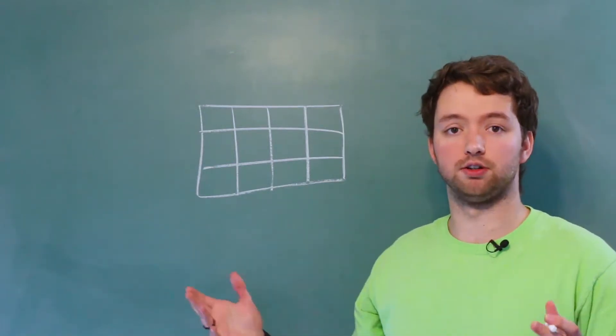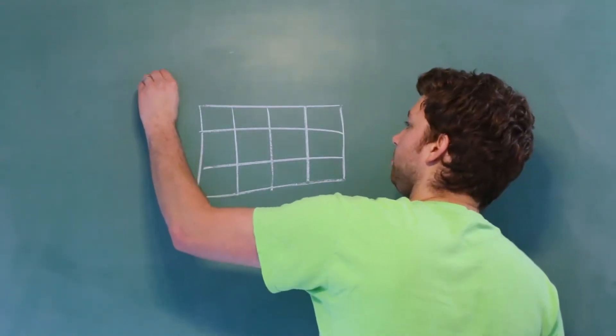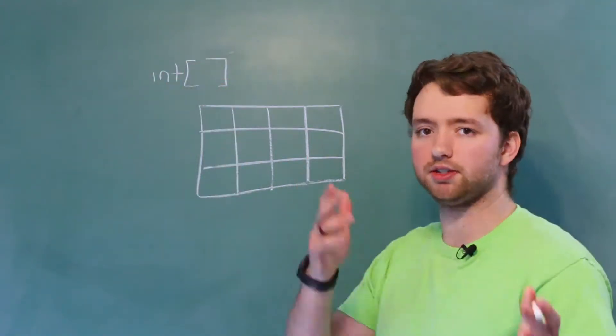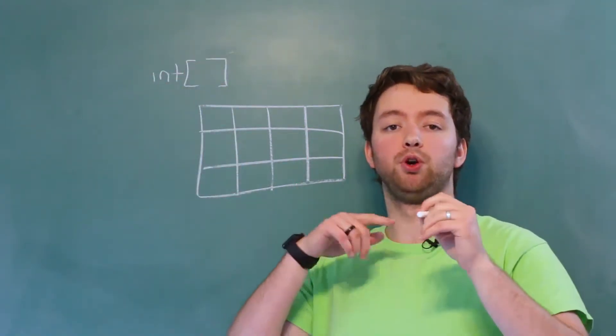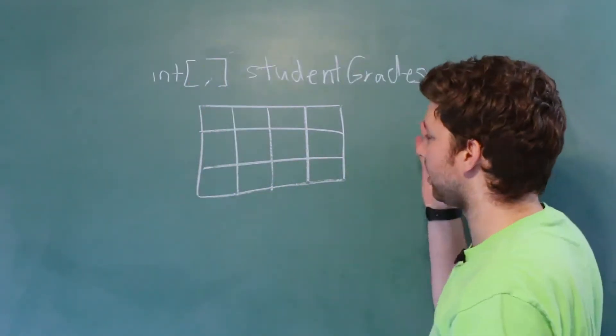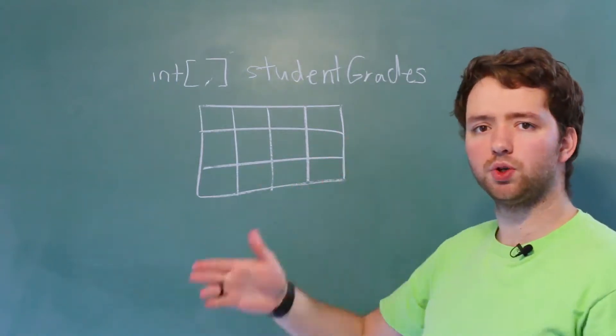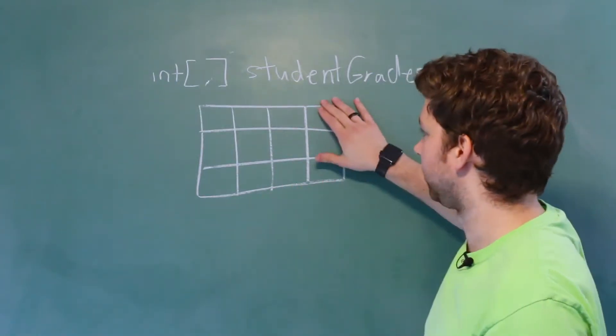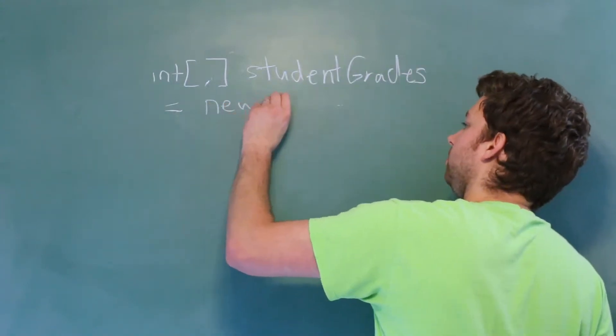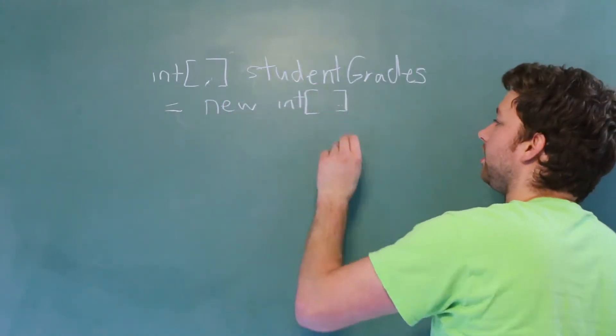Now the way you create one of these is going to look like this. You choose a type such as int and put the square brackets just like you would with a single dimensional array, but this time you're going to put a comma. Give it a name, student grades as an example. And what are you going to assign to this? Well, you would say new int square brackets.